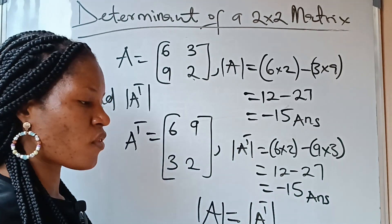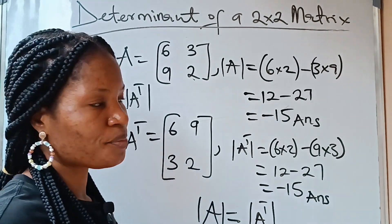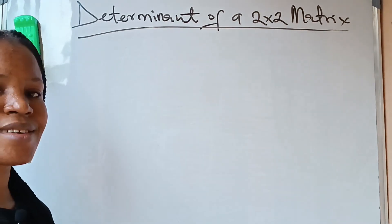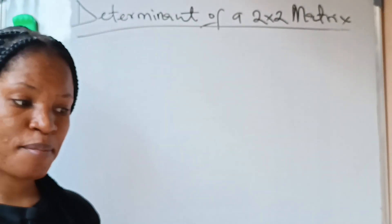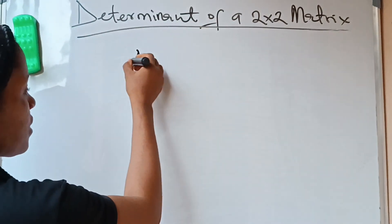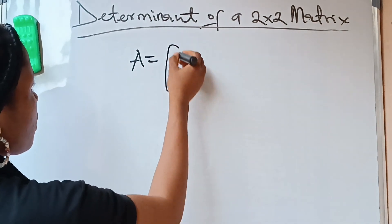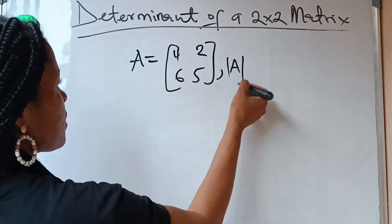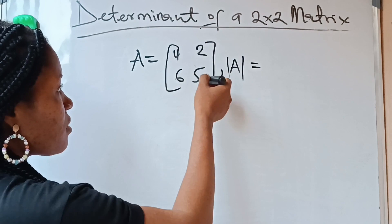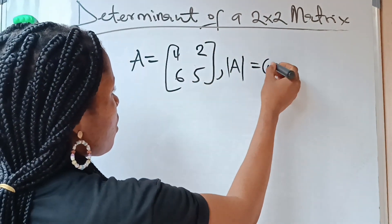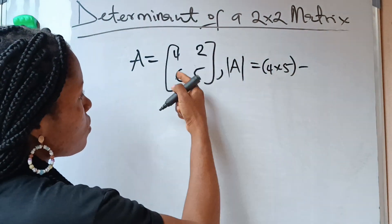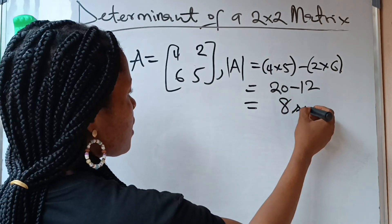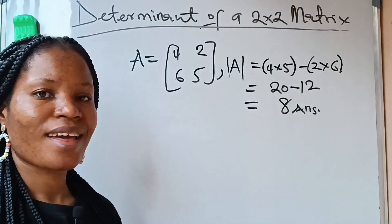Notice that the determinant of A is equal to the determinant of A transpose. We got determinant of A as minus 15, and we got determinant of A transpose as minus 15. So the determinant of a matrix is also equal to the determinant of its transpose. Let's do one more example: if A is equal to [4, 2; 6, 5], the determinant of A is 4 times 5 minus 2 times 6, which gives 20 minus 12, which equals 8.